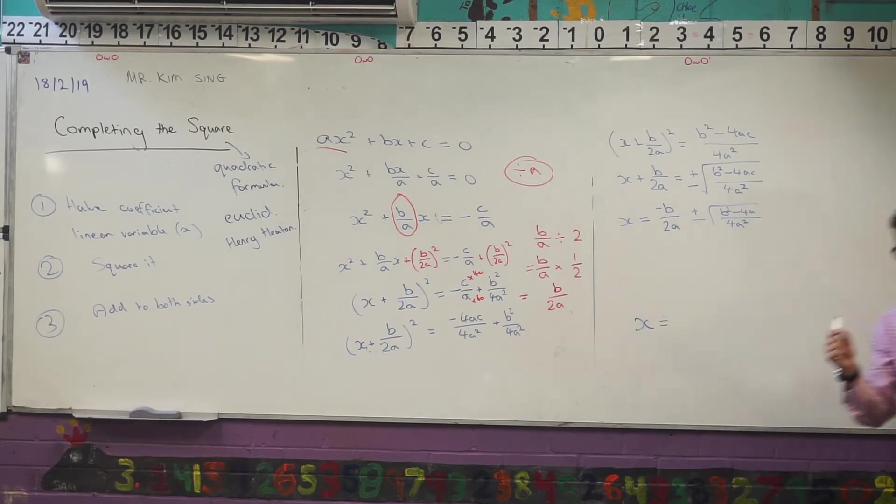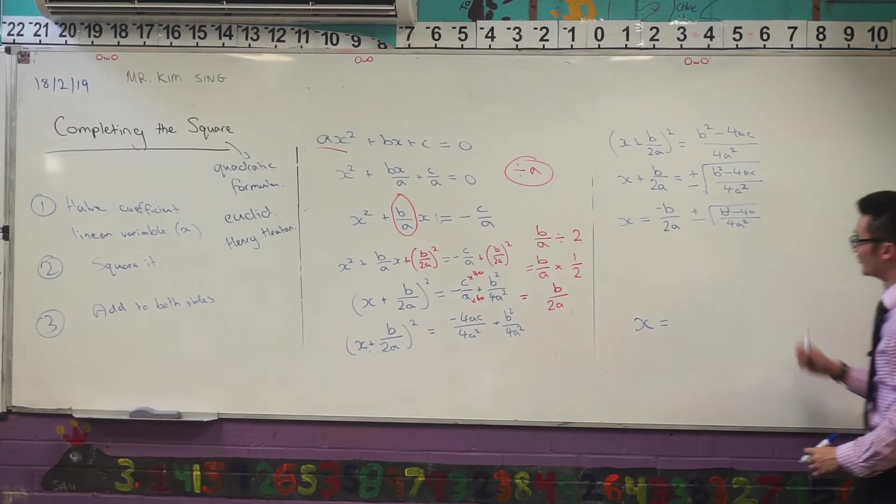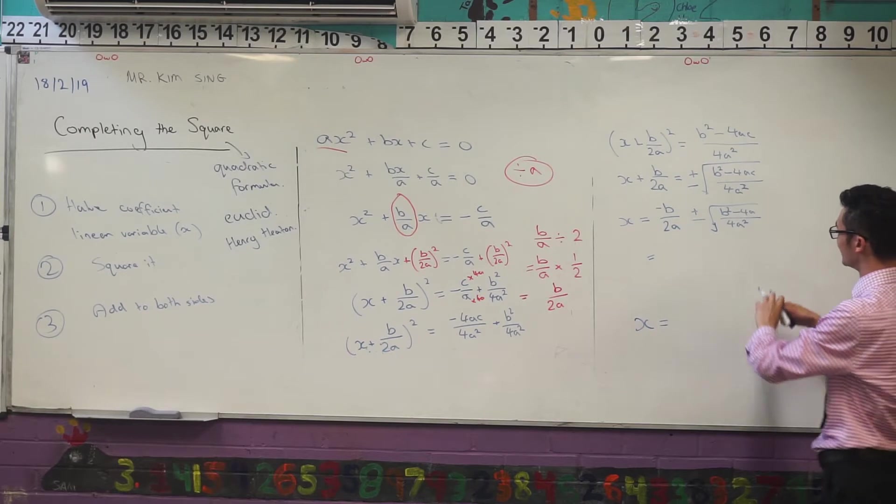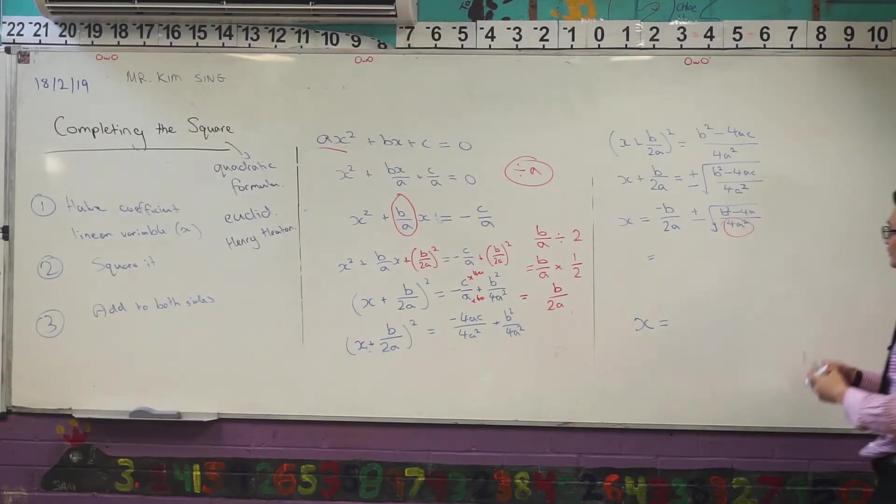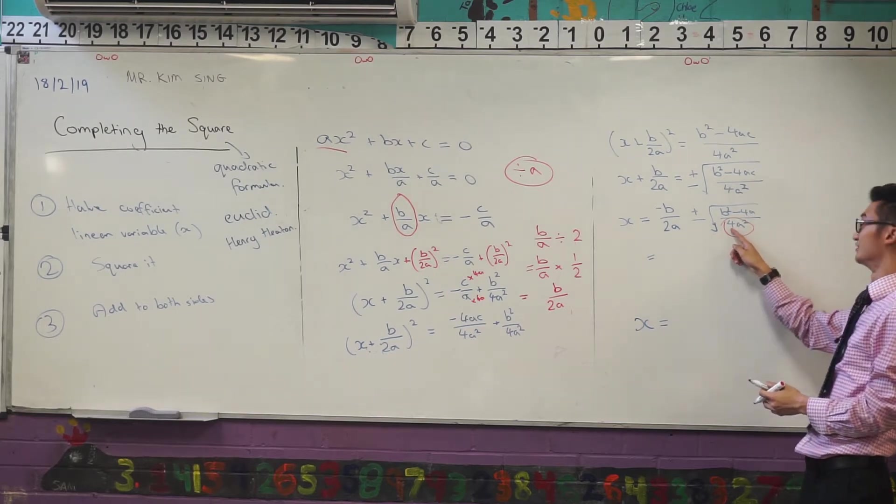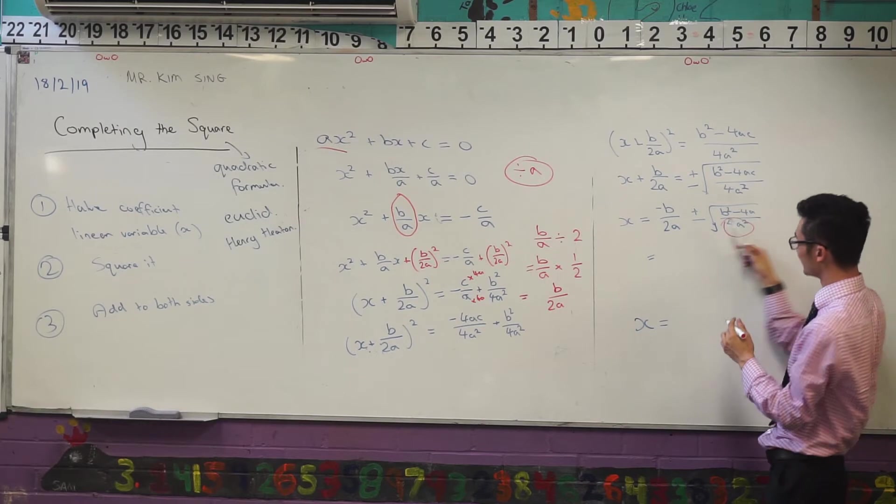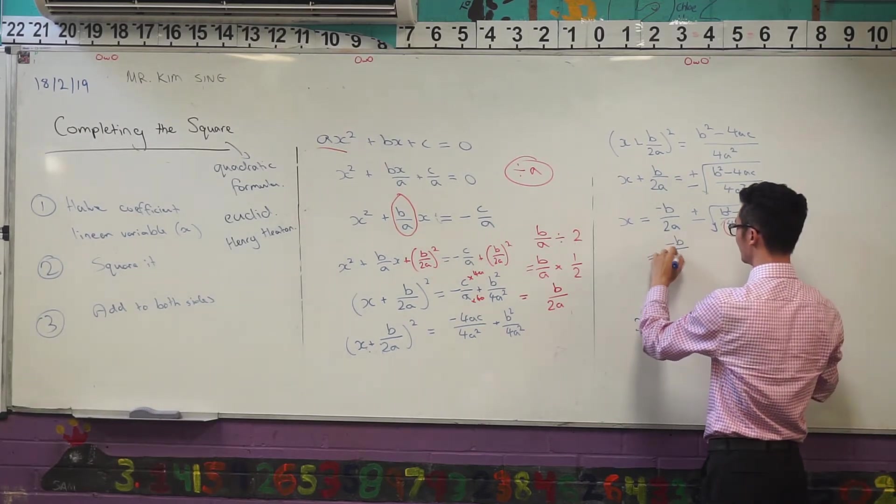Now, if you're familiar with the quadratic formula, this isn't quite the form that you recognize. We actually have to do one extra step. And that's if you look at this denominator here, you'll notice that these are actually square numbers. The square root of 4 is 2, and the square root of a squared is just a. So I can actually simplify that a bit nicer. I'll just take the square root of that denominator component.